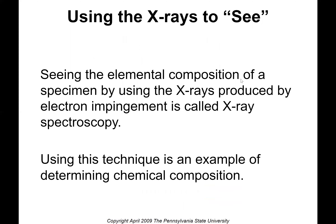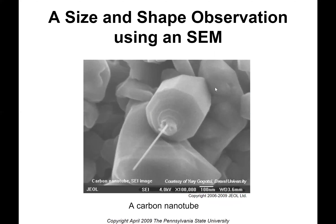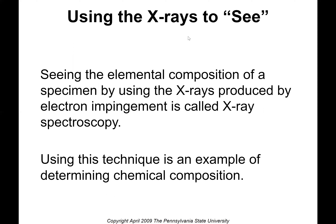Using x-rays to see means seeing the elemental composition. If you look at an SEM image, all the parts are just different shades of gray — you can't tell what material it is. You can tell that one area looks different from another, and you can tell some things about the structure, but not what it's made of. So you can use the x-rays — those high-energy photons that come off when electrons excited by the impinging beam come back to the ground state — to determine the elemental composition of a specimen. That way you can actually tell what the material is.